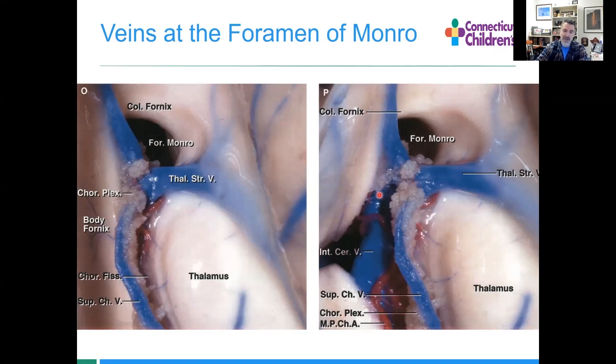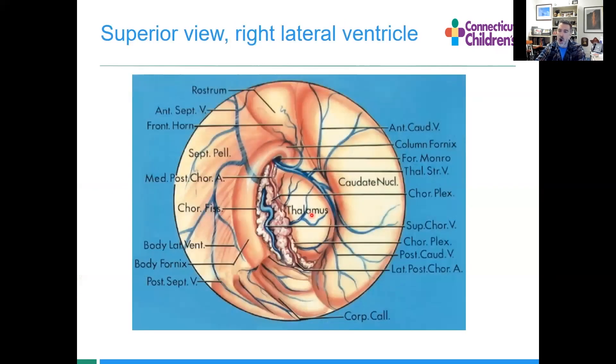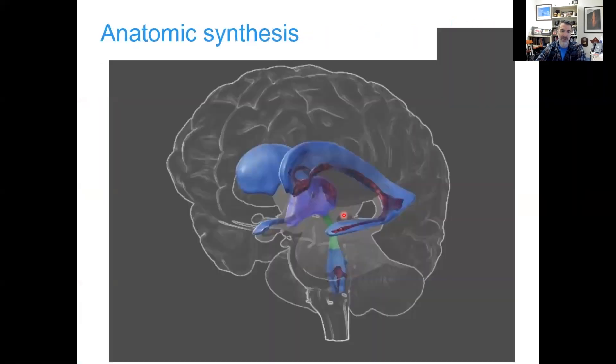The thalamostriate vein curves into the internal cerebral vein with a column of the fornix here. This cartoon shows all of those structures in context: where's the thalamus and where's the caudate nucleus. The thalamostriate vein runs in this groove between the two.